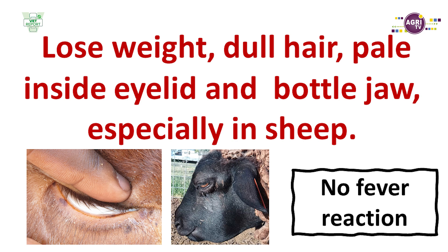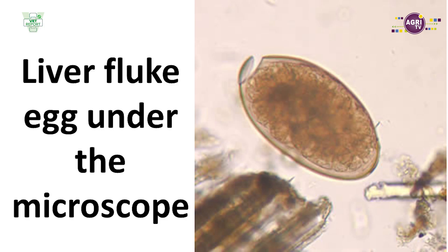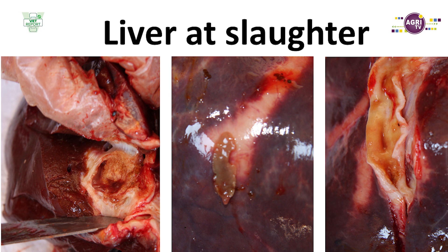Suddenly you see your animals becoming thin. If you look at the inside eyelid, it can become white. There's no fever because it's a parasitic disease, and you need to treat. It's not always easy to identify — you can send in a dung sample, and if the liver fluke is adult, the vet can identify it. Mostly farmers identify it when they slaughter cattle and the liver is full of liver fluke. That liver will be discarded and cannot be used for human consumption.